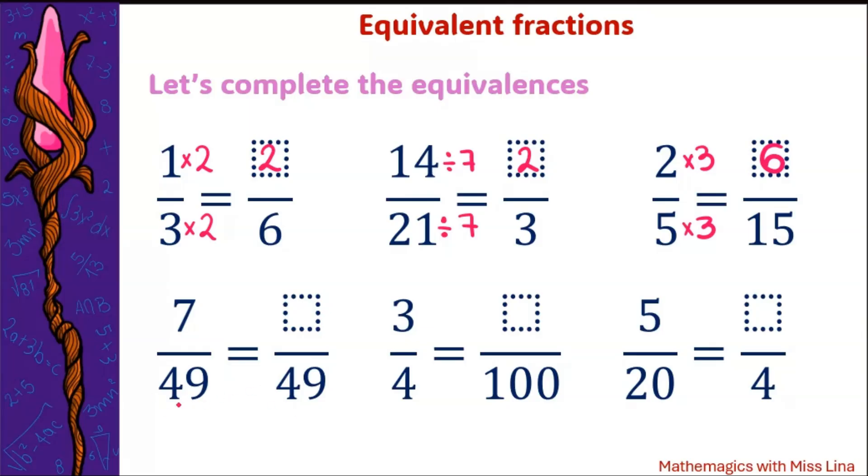In this one notice that the denominator is already 49. So there's nothing that we should do. The only equivalent that we are going to have is having exactly the same number at the top. No operations or if you want to see it that way is multiplying by one. So you are going to get just exactly the same equivalent fraction.